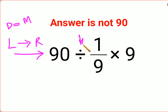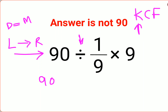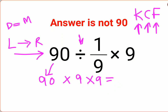Whatever operation happens first on your left-hand side has to be done first. So 90 divided — we have KCF, right? Whenever you have division, we follow the rules of KCF: K stands for keeping the first number as it is, C stands for changing the division sign to multiplication, and F stands for flipping — taking the reciprocal of 1/9, which is 9 — multiplied by 9. So this gives you 810 multiplied by 9, and the answer for this question is 7290.